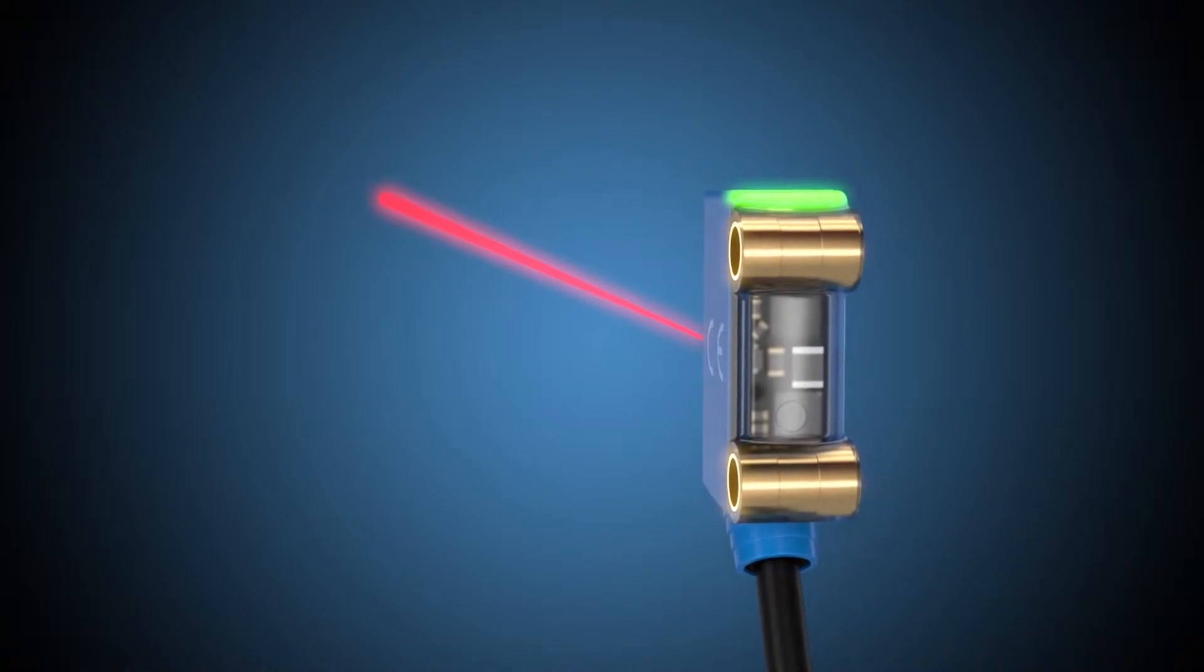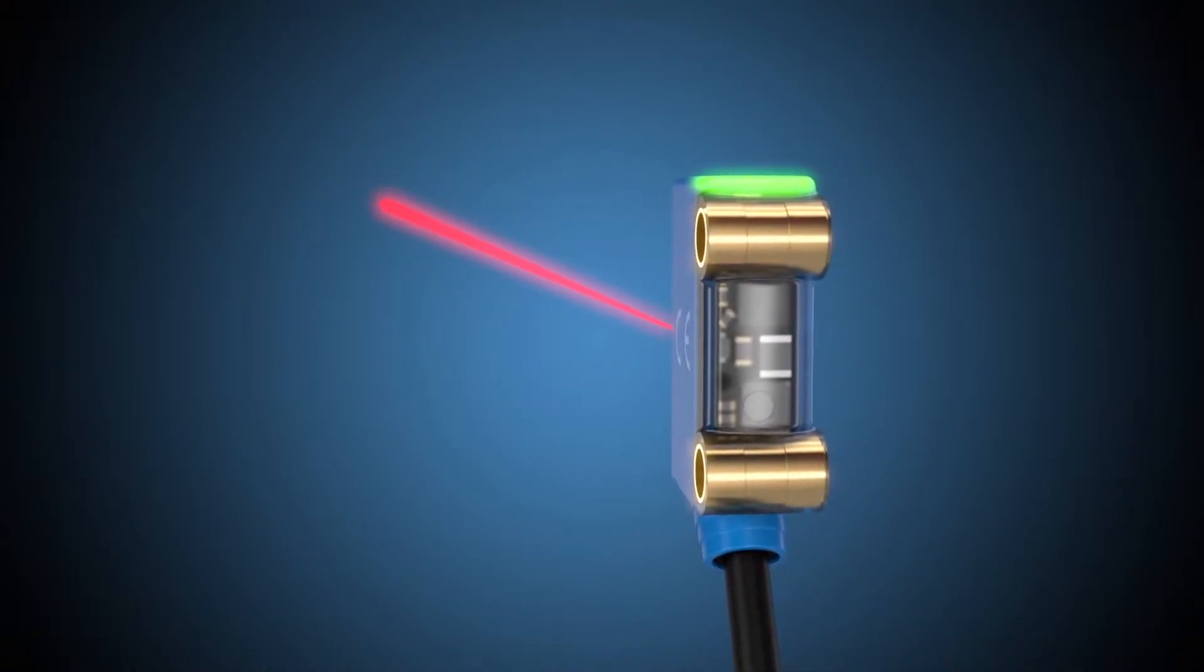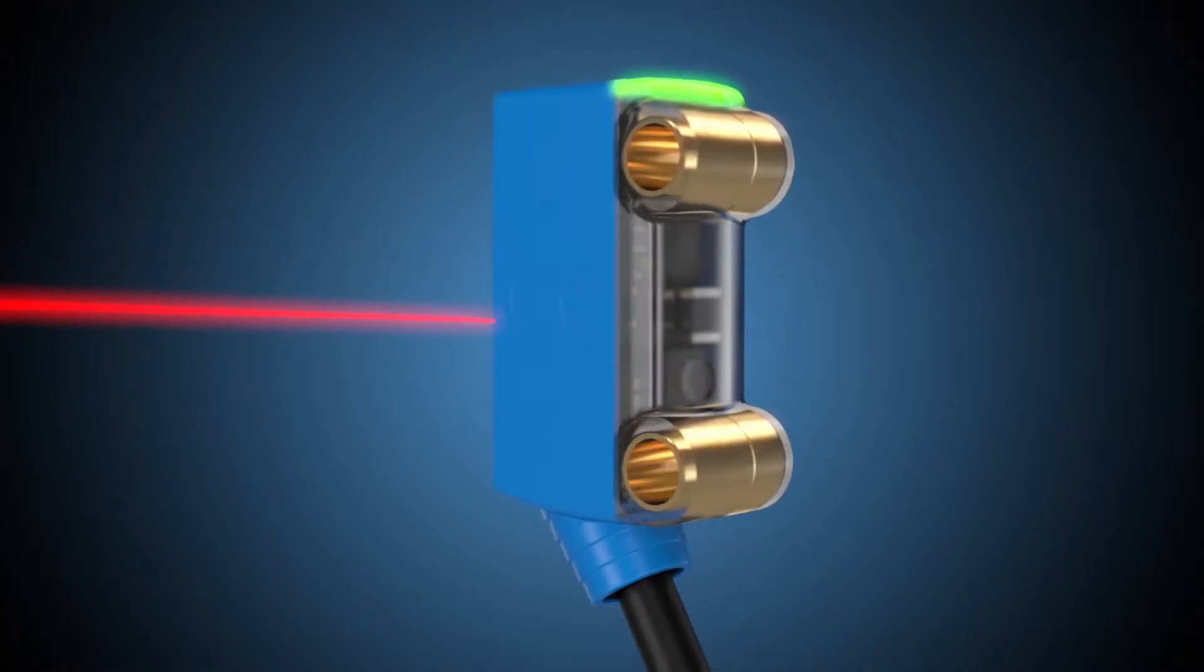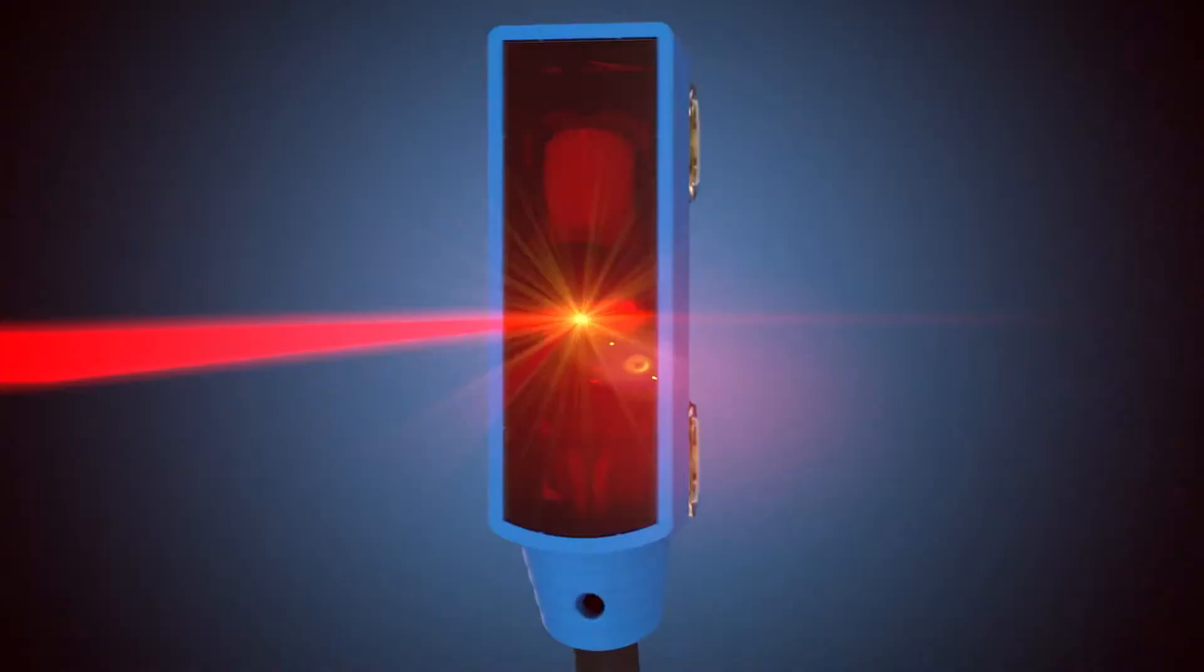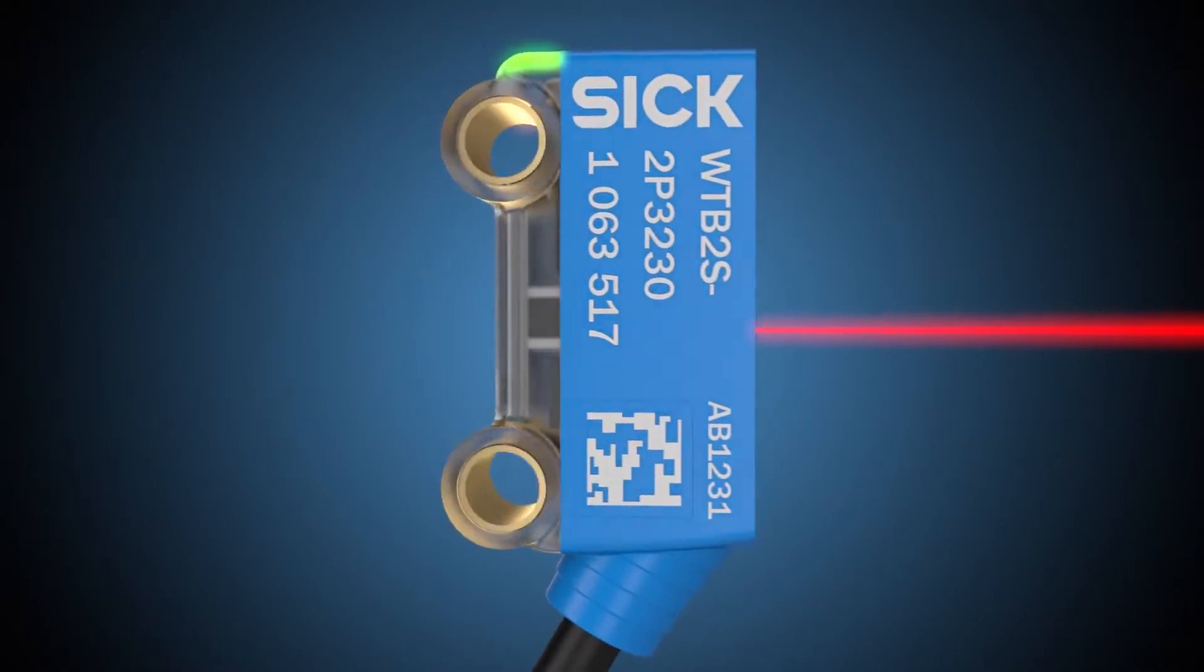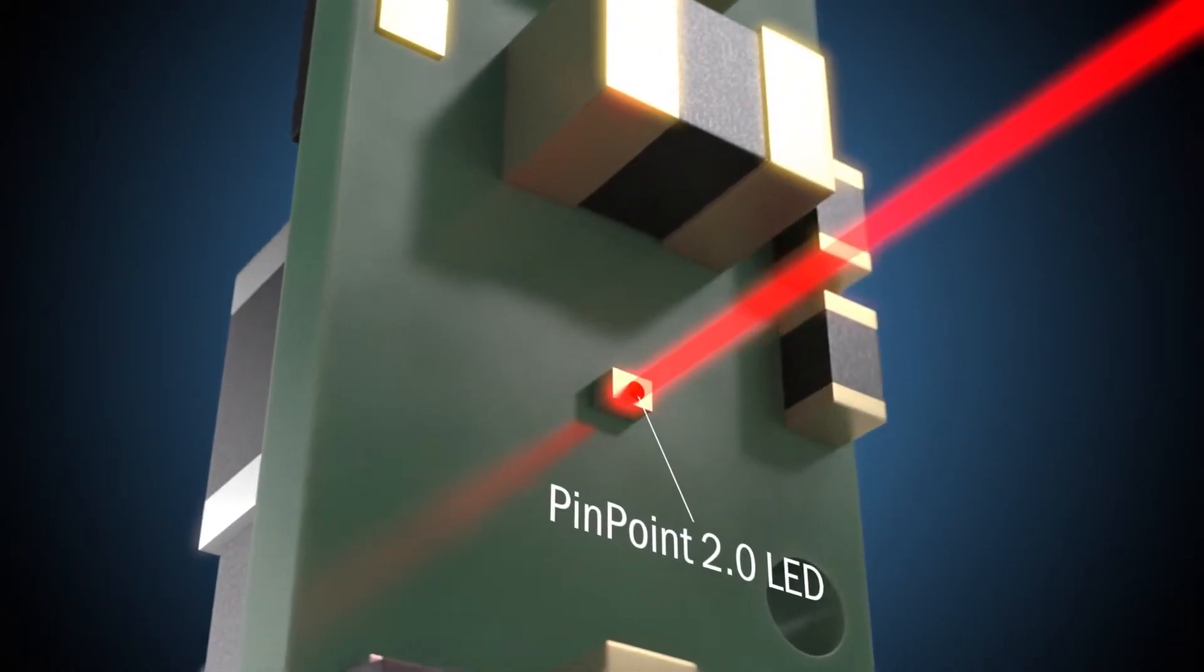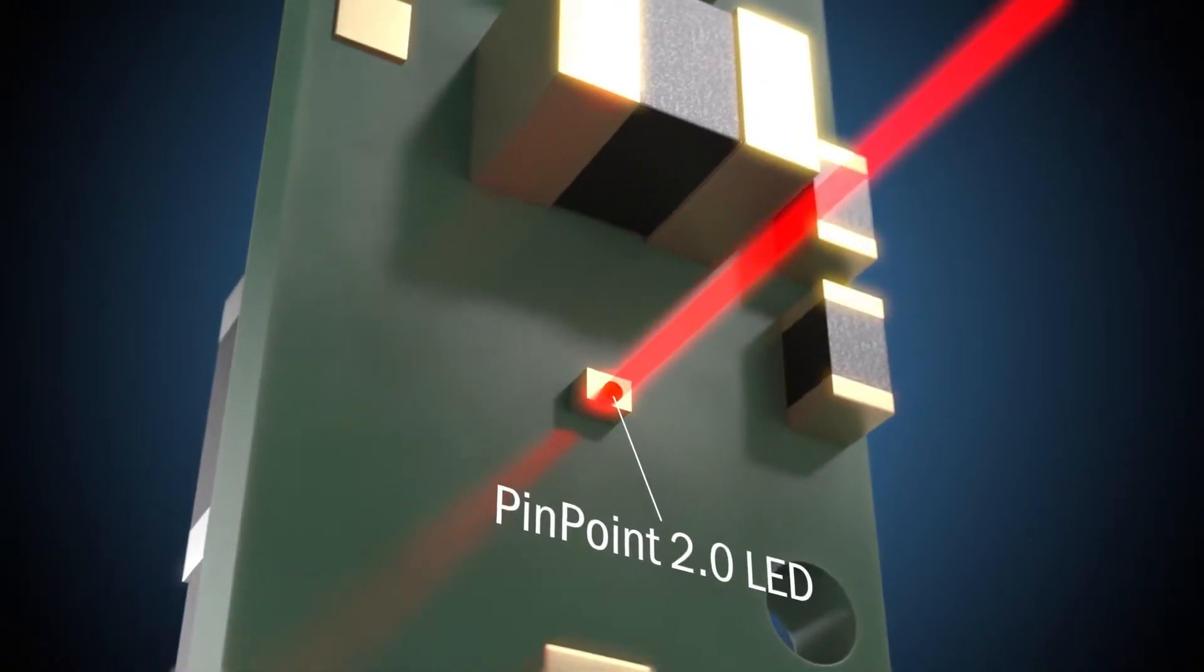So you can say goodbye to almost all those bulky reflective and through-beam systems. When you consider that this involves much less time-consuming installation too, it's a clear choice. The new Pinpoint 2.0 LED detects not only black objects, but also those which are nearly invisible.